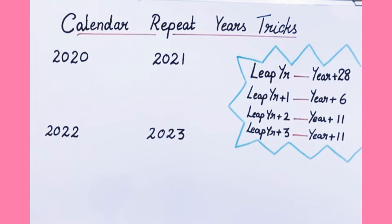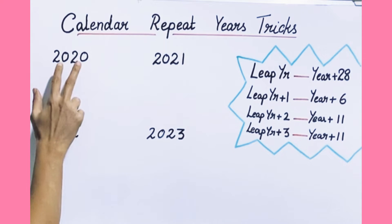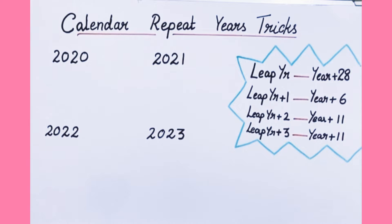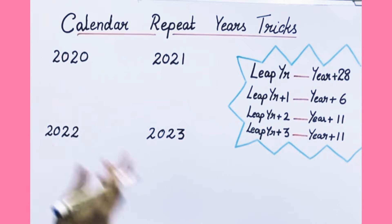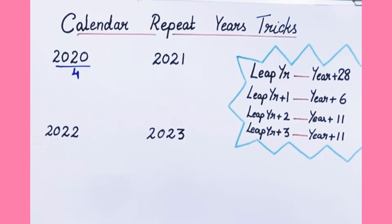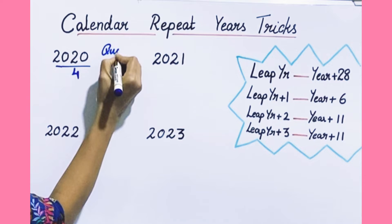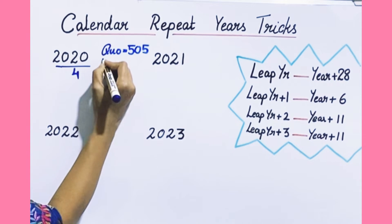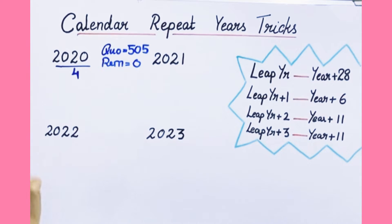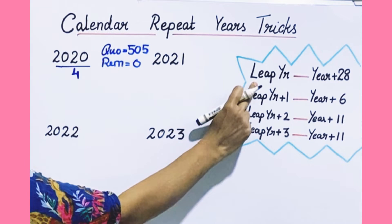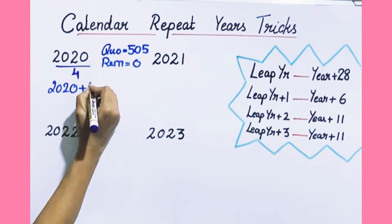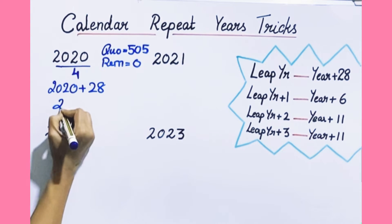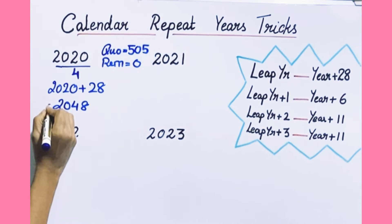As a calendar repeats, let's find out when the calendar of the year 2020 repeats. To find that, take 2020 and check whether it is a leap year or not. Divide it by 4 — the quotient will be 505 and the remainder is 0. If the remainder is 0, then it is a leap year. So take the year and add 28. That means the 2020 calendar repeats in 2048.